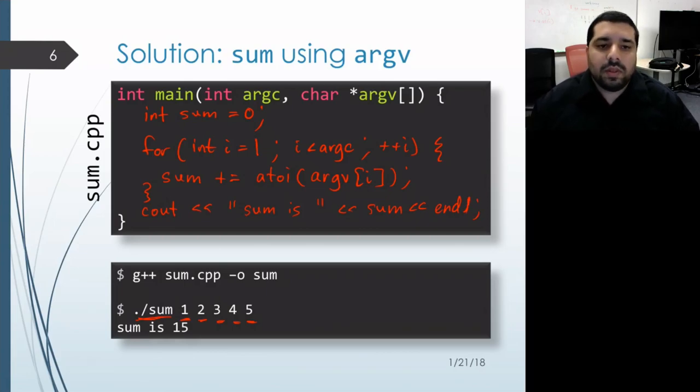With this program, no matter how many command line arguments we get, we're always going to get the sum of each of those arguments. With the example down below, argc is actually equal to six because there are six command line arguments, including the name of the program.